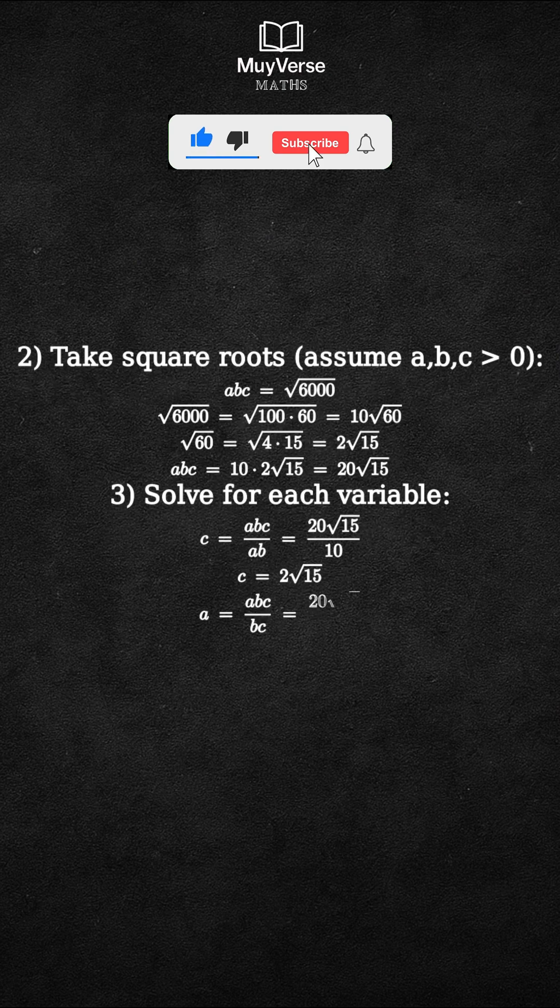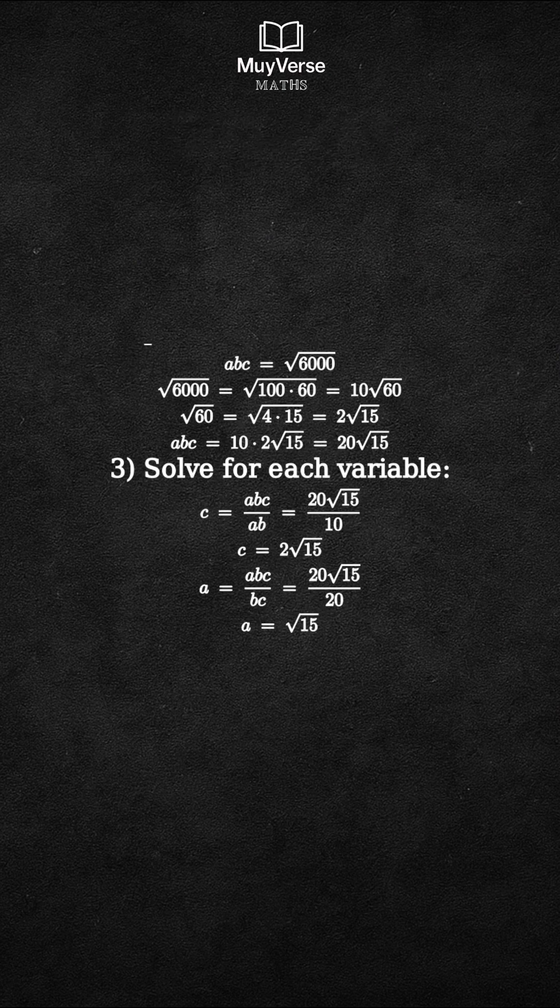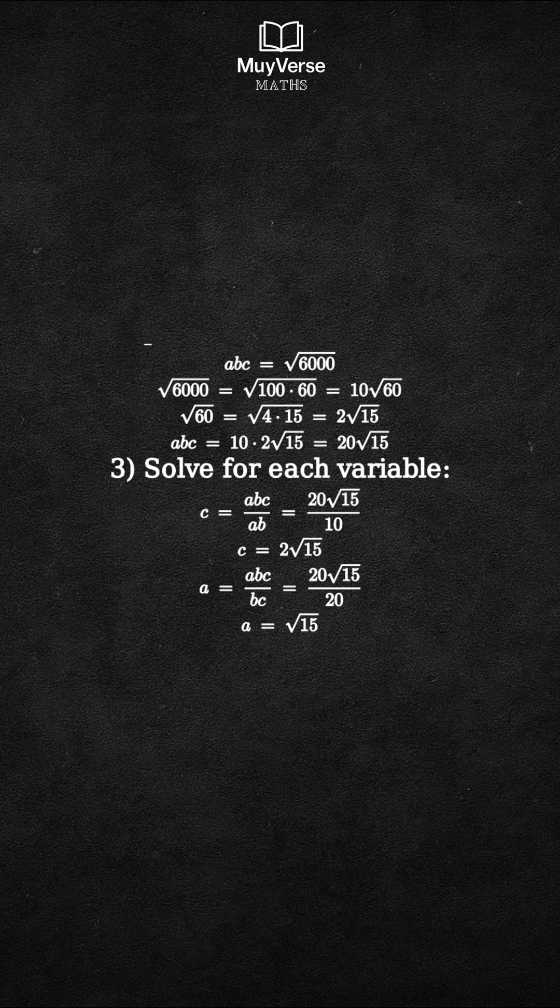From bc equals 20, we get a equals abc divided by bc, which is 20 square root 15 divided by 20, which simplifies to the square root of 15.